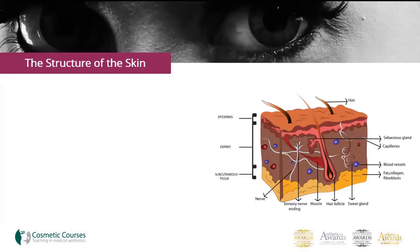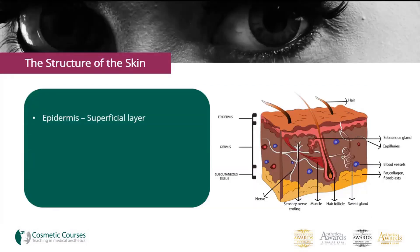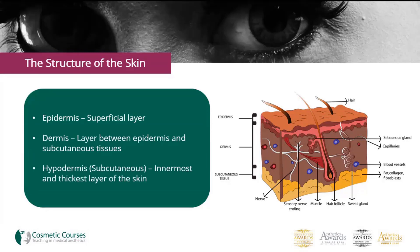The skin is made up of three layers: the epidermis, which is the most superficial layer; the dermis, which is the middle layer; and the hypodermis, which is also known as the subcutaneous layer and is the innermost and thickest layer of the skin.